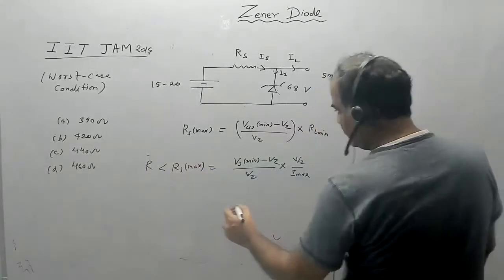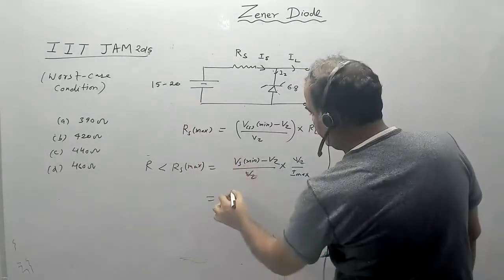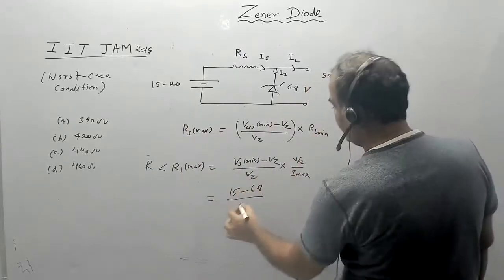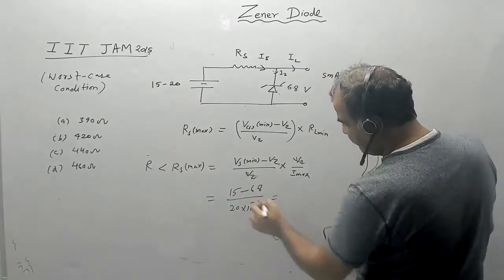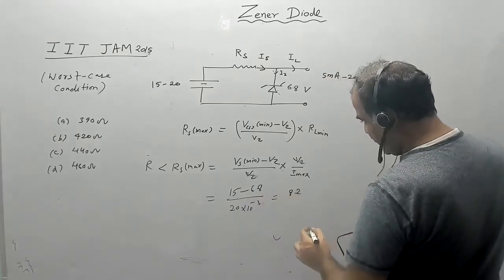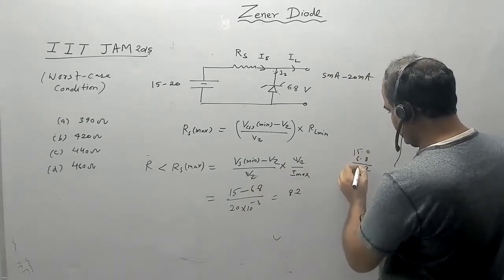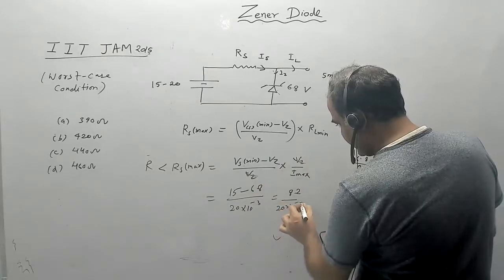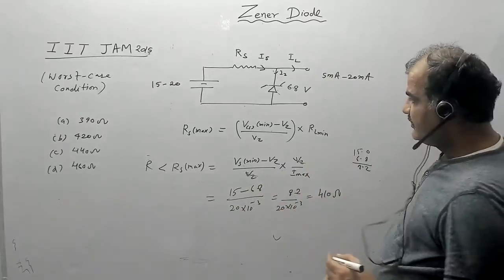Solving numerically: V_s minimum is 15V, V_z is 6.8V, and I_L max is 20 milliampere. So Rs max equals (15 minus 6.8) divided by 20 times 10 to the power minus 3, which equals 8.2 divided by 0.02, giving Rs max equal to 410 ohm.